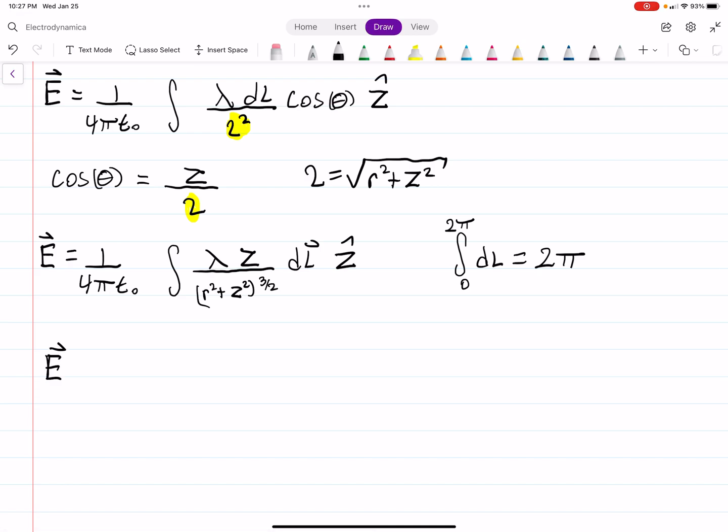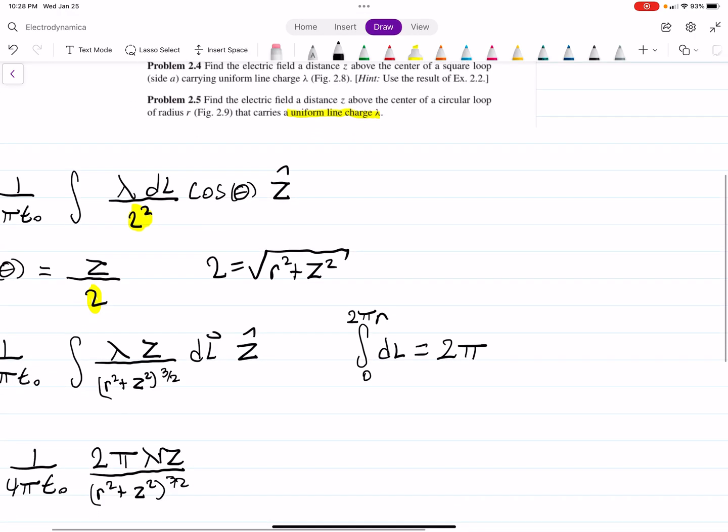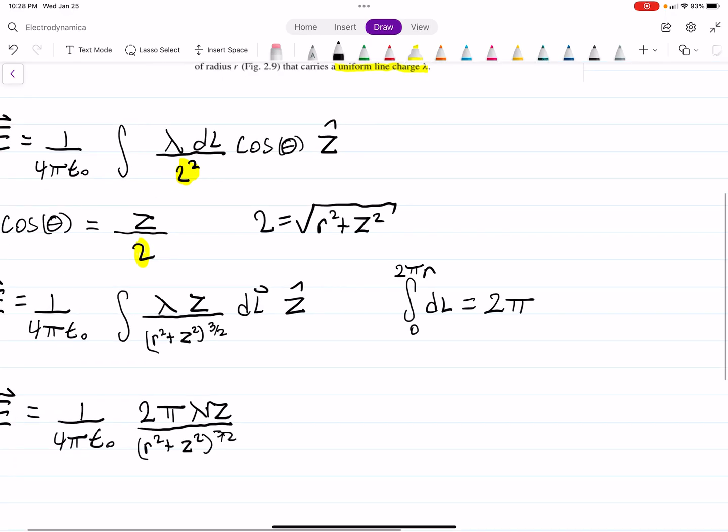Everything else can be factored outside of the integral. So then our electric field is equal to 1 over 4 pi epsilon naught, 2 pi lambda z r divided by r squared plus z squared to the 3 halves. Because we're going around the circumference of that circle, the circumference of the circle is 2 pi r. The circumference of the circle obviously must depend on the radius. And that's in the z hat direction.